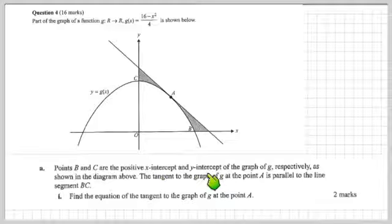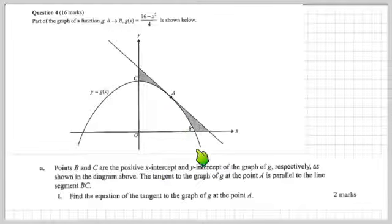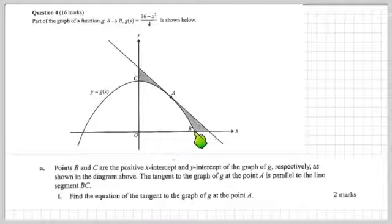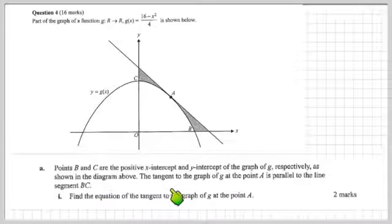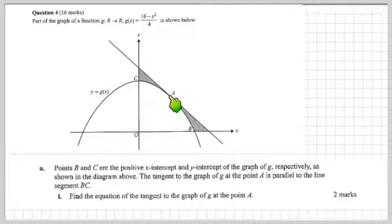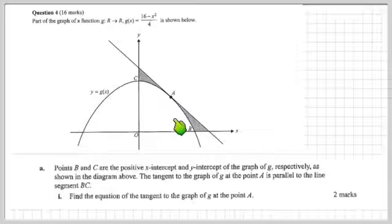The tangent to the graph of g at the point A is parallel to the line segment BC — so that would be from there up to there. We've got to find the equation of the tangent to the graph of g at the point A, knowing that it's got to be parallel to the line segment B to C.